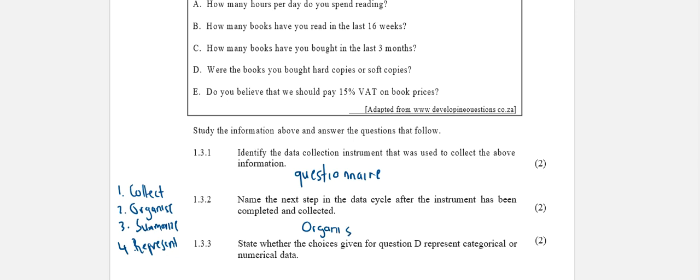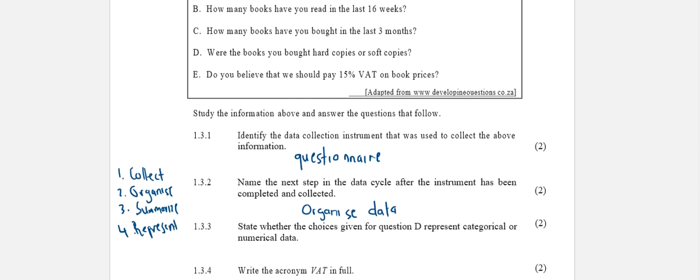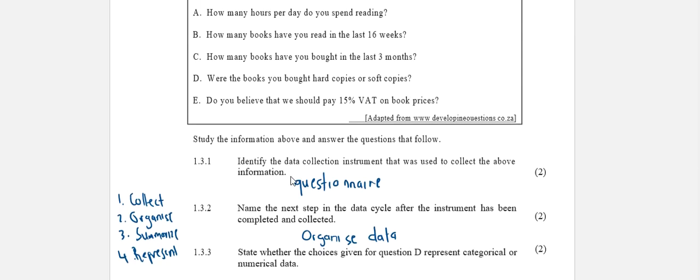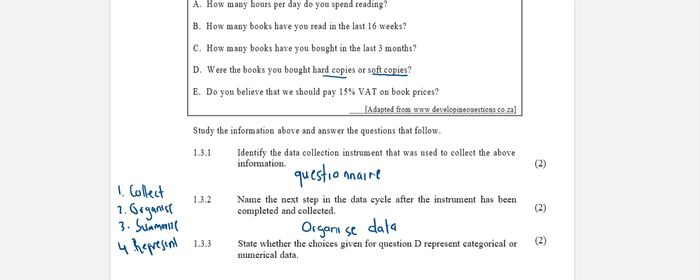Question 1.3.3: State whether the choices given in question D represent categorical or numerical data. Let's look at question D above. The person is asked were the books you bought hard copies or soft copies. That would obviously be categorical because a person can only choose between those two categories. Either they bought a hard copy or a soft copy, so they are choosing between categories. This is categorical data.